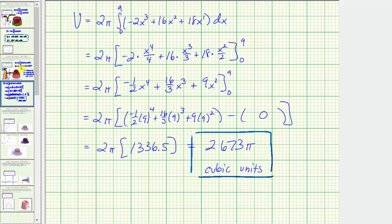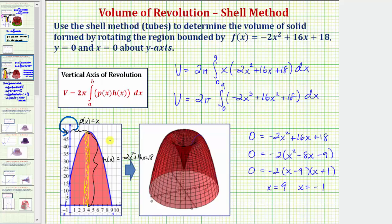So going back to the first slide, we now know if we take this bounded region and rotate it about the y-axis, it gives us this solid. And this solid has a volume of exactly 2673 pi cubic units. I hope you found this helpful.